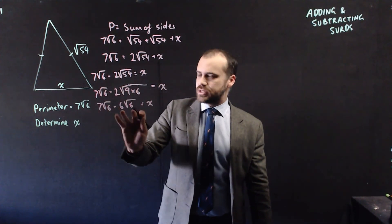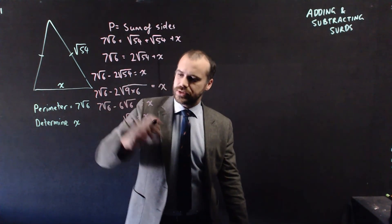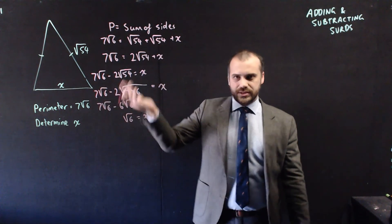7 root 6 minus 6 root 6 is root 6. Root 6 equals x. The length of this side is root 6.